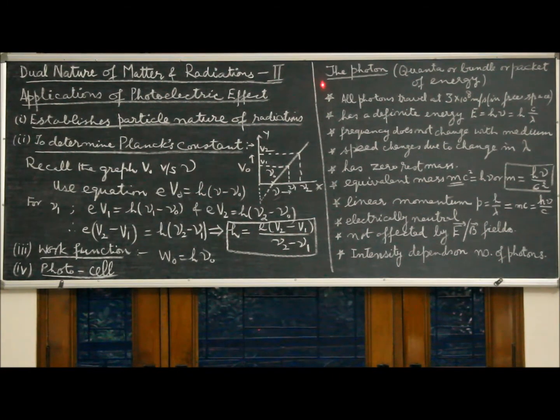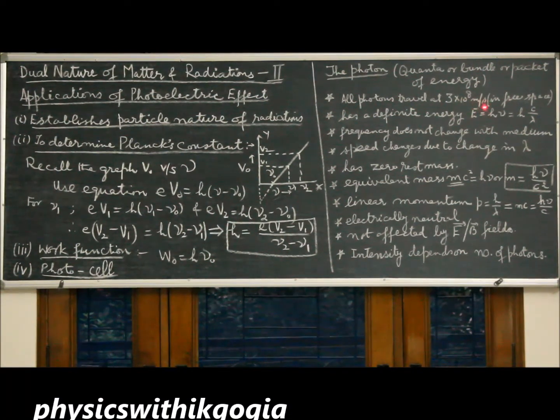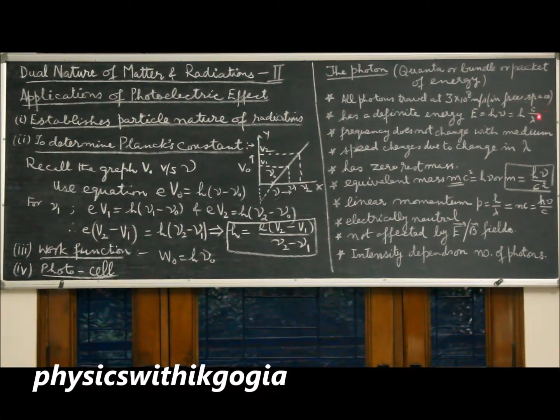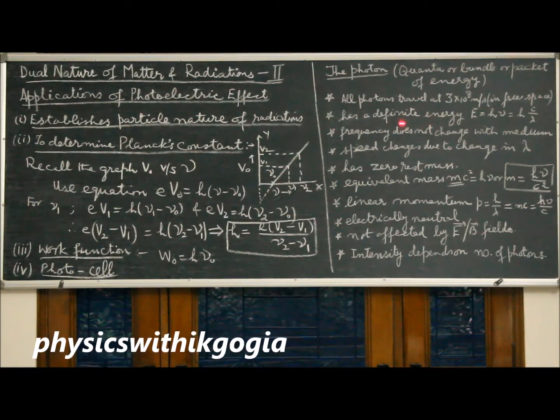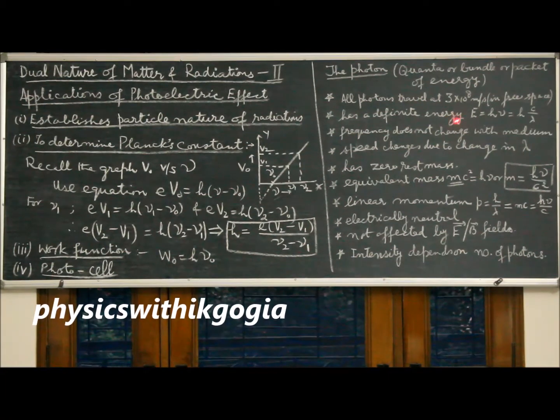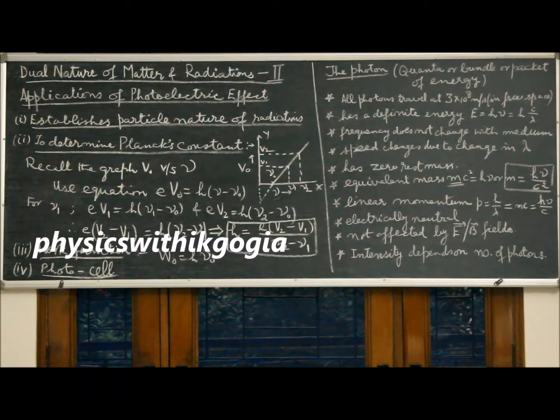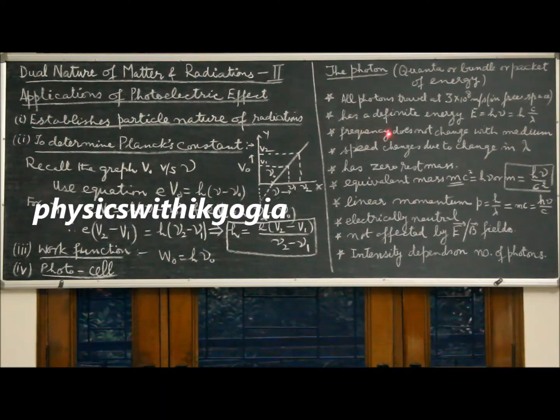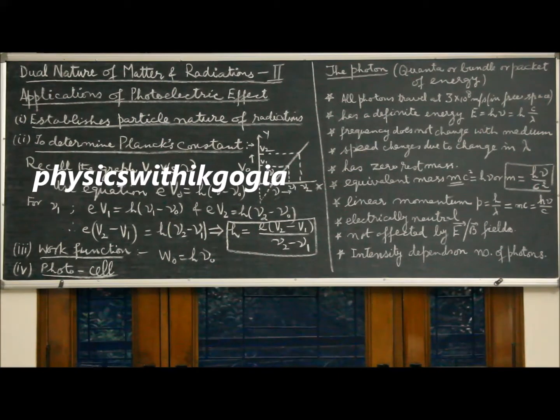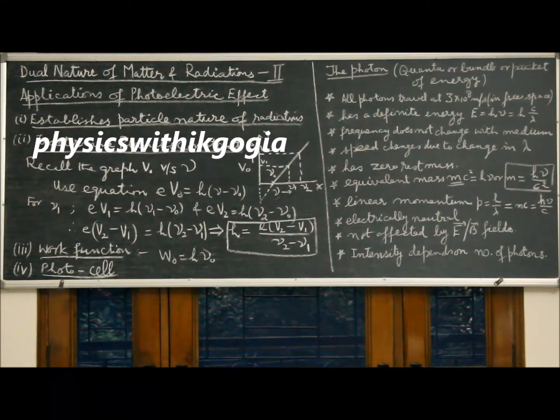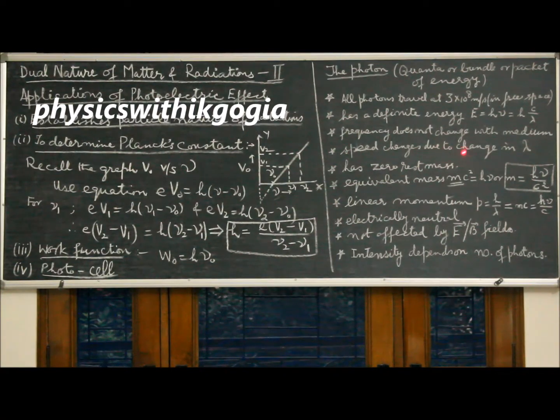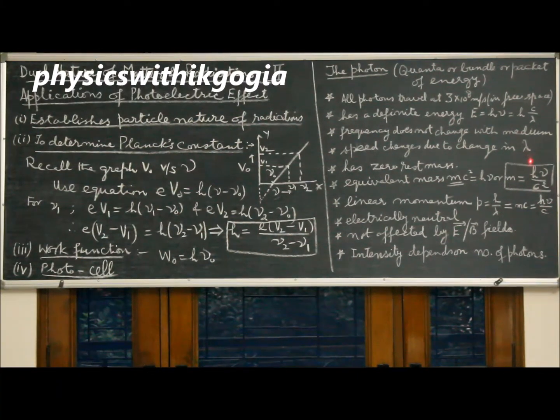Now coming to the photon and its properties. The photon is a quanta or bundle or packet of energy. Some characteristics of the photon are: all photons travel at 3 times 10 to the power 8 meters per second, which is speed of light in free space or vacuum. Every photon has a definite energy, E equal to h nu. The energy of a photon depends on its frequency, hc by lambda. When a photon enters from one medium to another its frequency does not change. Frequency is a fundamental property of the photon and always remains the same. The speed of a photon changes when it travels from one medium to another due to change in wavelength of the radiation.